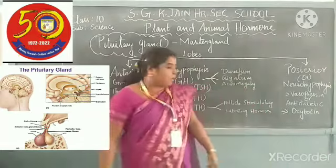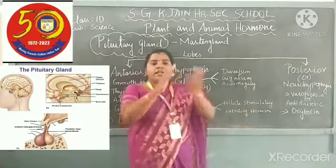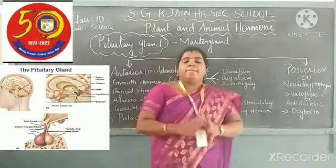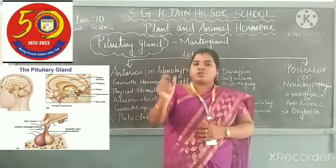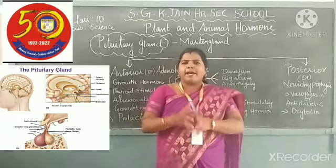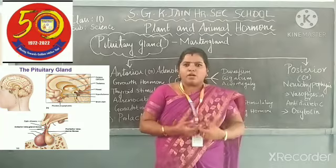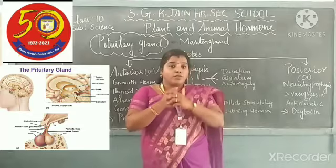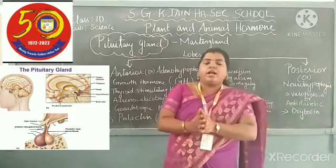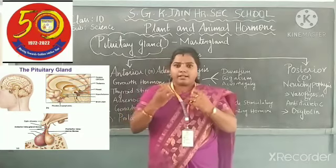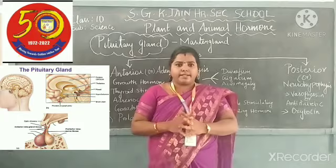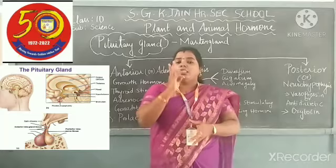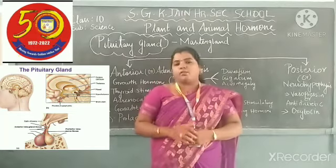FSH means Follicle Stimulating Hormone and LH means Luteinizing Hormone. In the male, the hormone is testosterone — only one hormone is present. In the female, there are two kinds of hormones: estrogen as well as progesterone. Both are living beings, but the female has two hormones because childbirth is very important for the female.